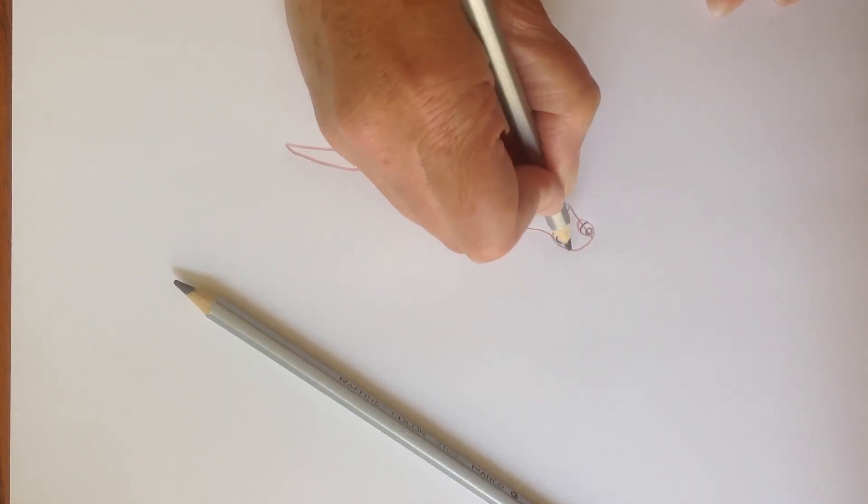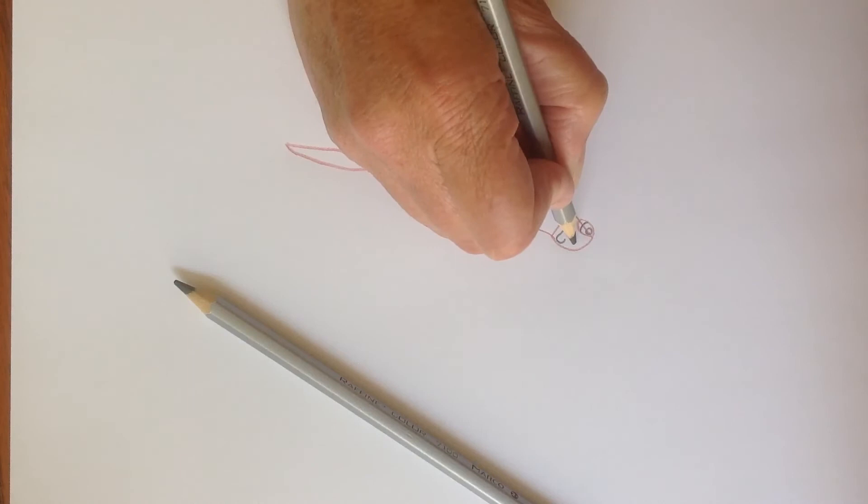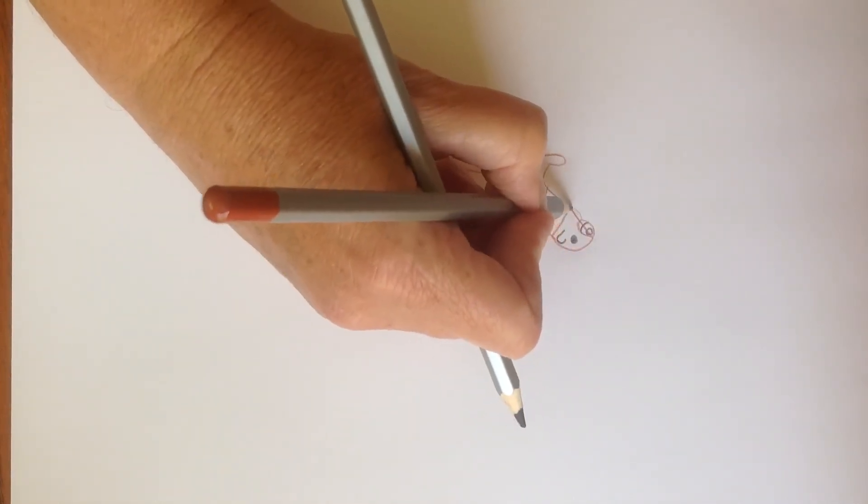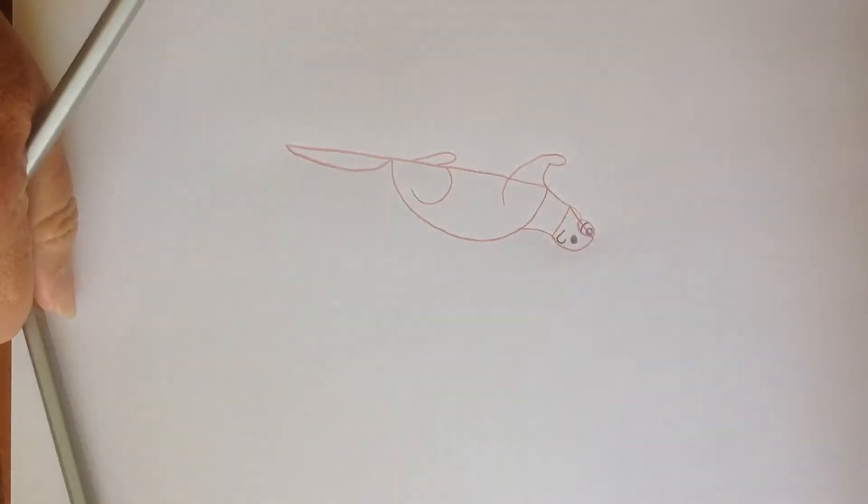They have ears so they can hear, and they have a little eye so they can see, and a little chin right here.